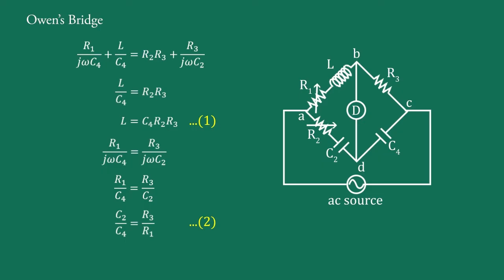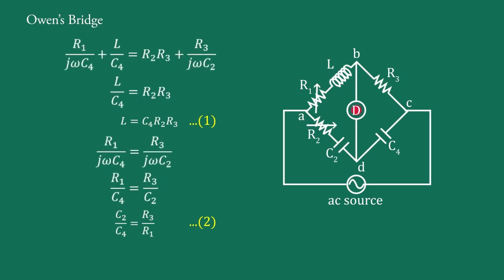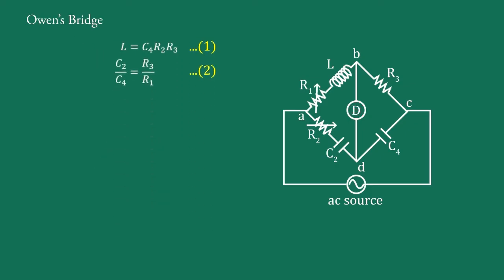The value of inductance L can be calculated from equation 1 when the bridge is balanced. At the condition of balance, the minimum sound is heard in the headphone or there is a maximum separation between the slits of a null detector. Now we will derive the parameters of the bridge. In arm AB, inductance L and resistance R1 are in series. The general formula of parameters for an R-L series connection is explained in the previous video.